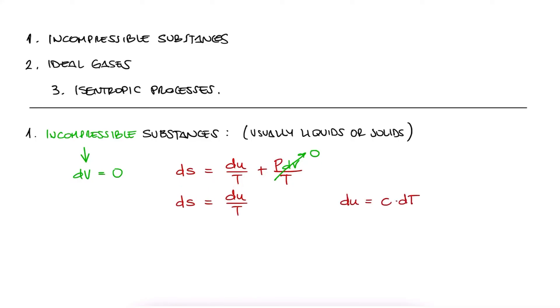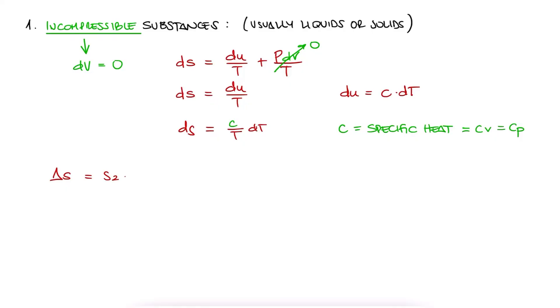we're left with ds equal to du over T, which becomes c dT over T, where c is just the specific heat since cv is equal to cp.